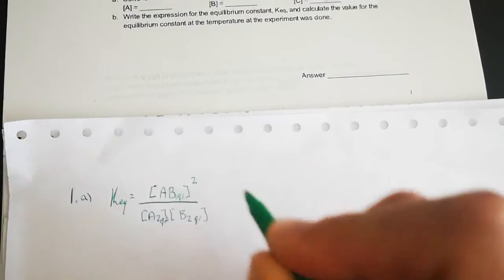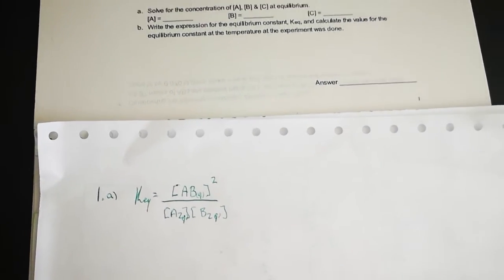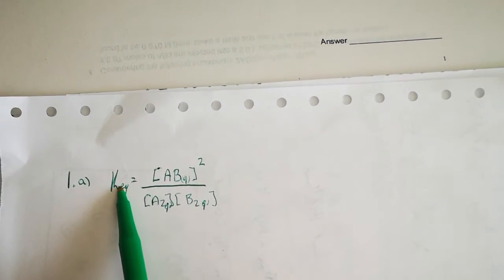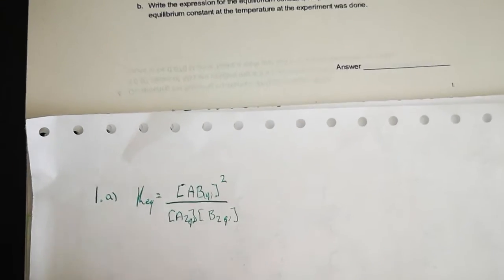These are all gases. It's often a good idea to include the state of matter. So recall that solids and liquids are pure substances with constant composition - their concentrations cannot change and they're factored into this constant.